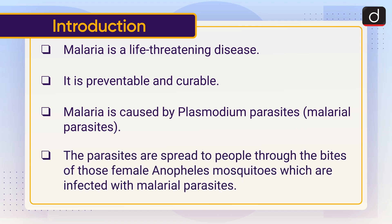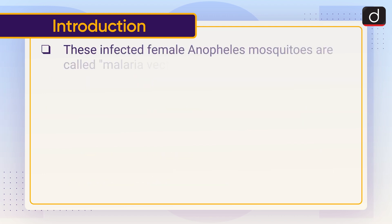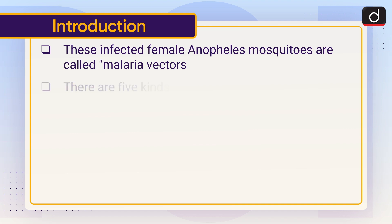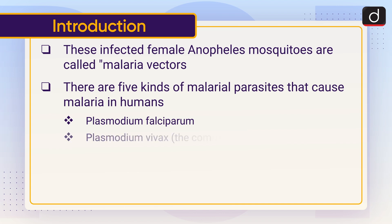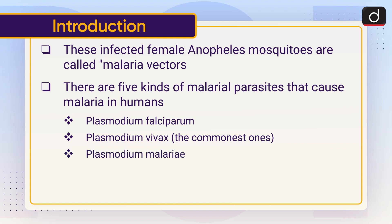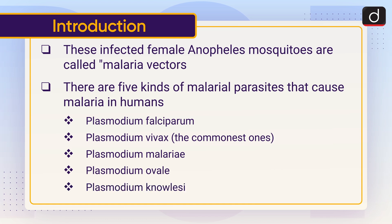The parasites are spread to people through the bites of infected female Anopheles mosquitoes, which are called Malaria vectors. There are five kinds of Malarial Parasites that cause Malaria in humans: Plasmodium falciparum, Plasmodium vivax — the most common ones — Plasmodium malariae, Plasmodium ovale, and Plasmodium knowlesi.